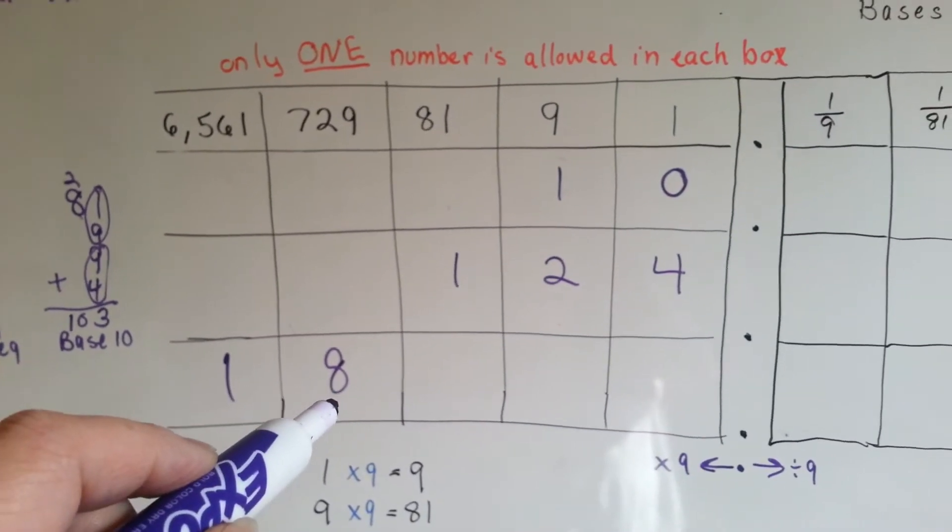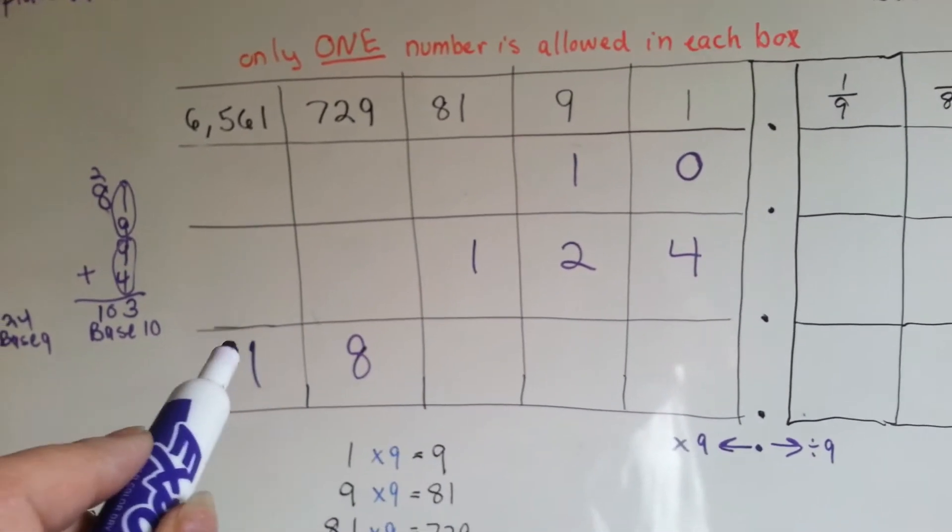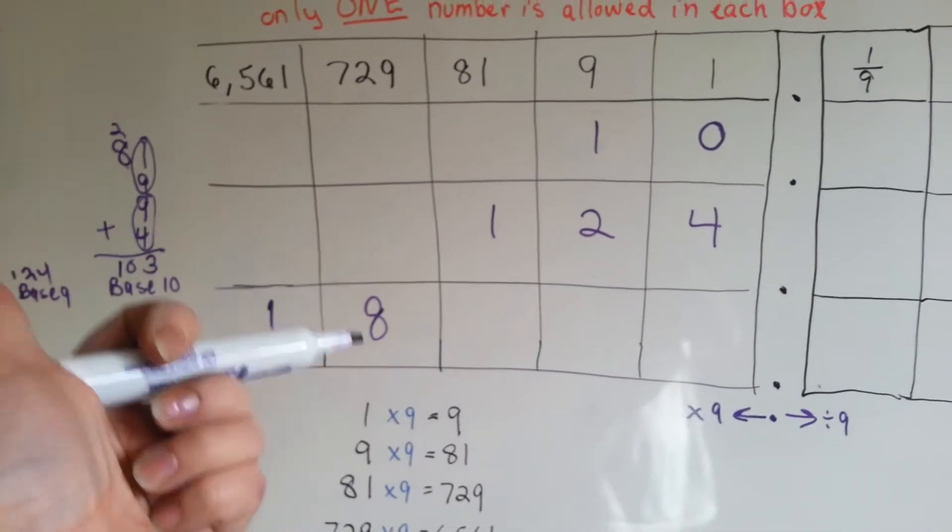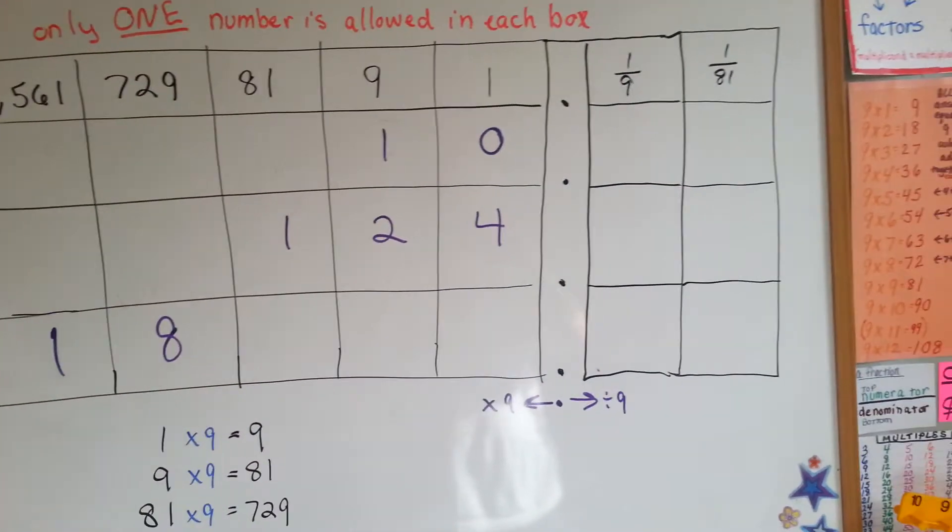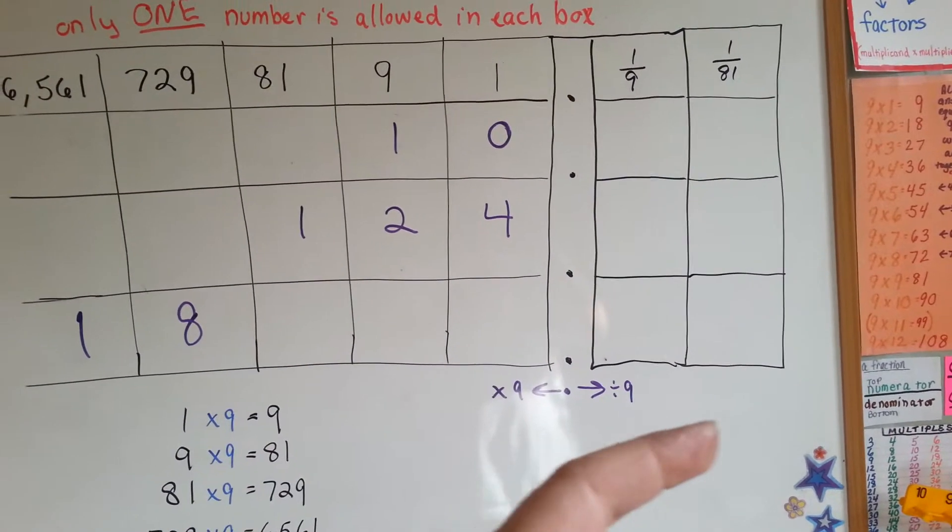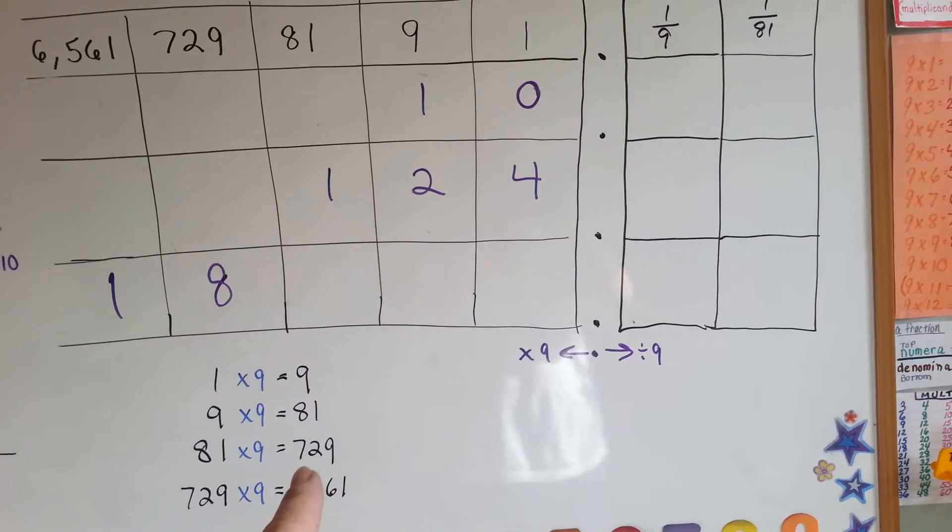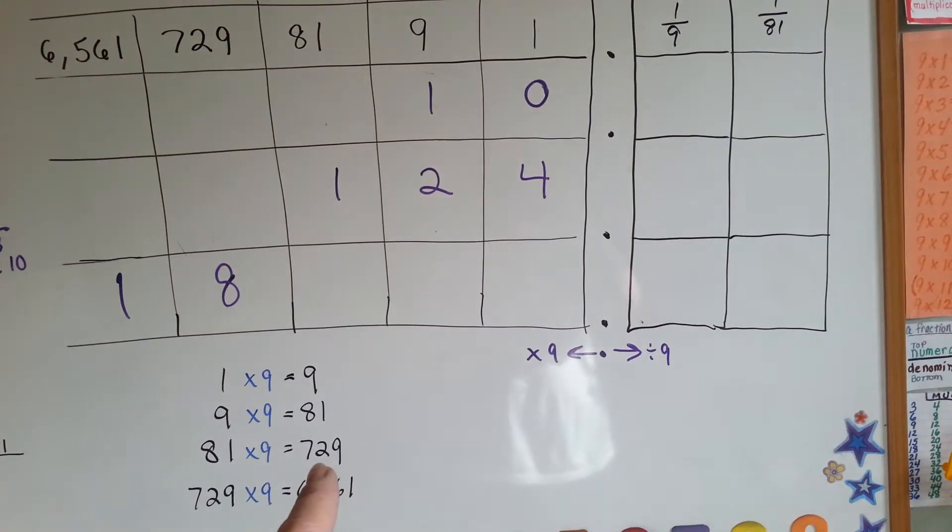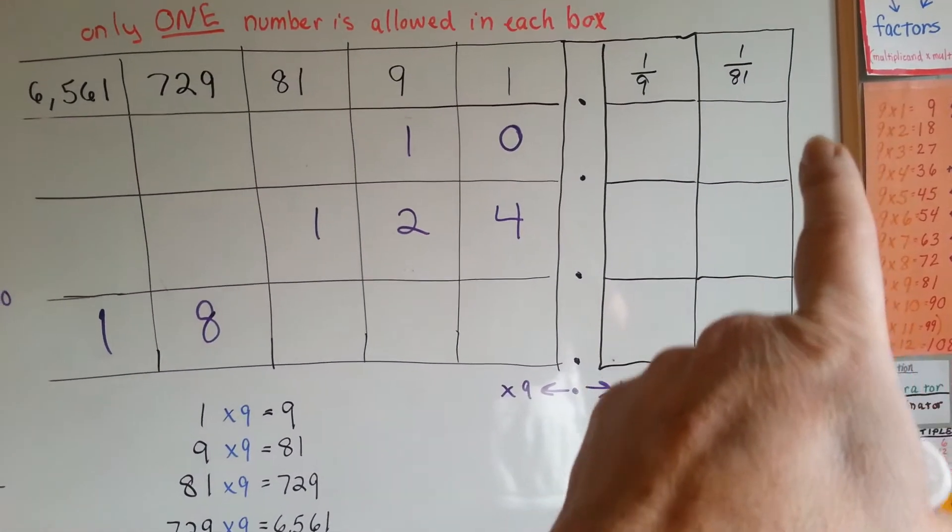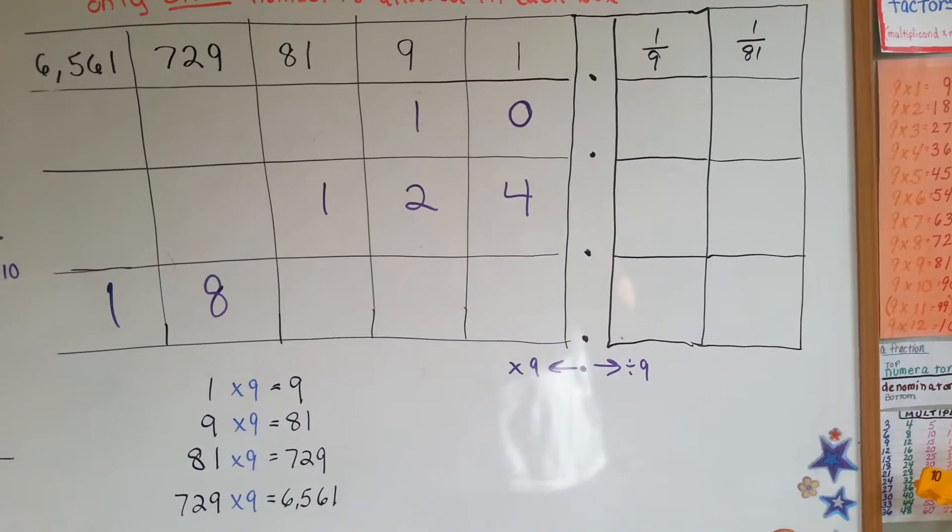So what you would do is, you would keep multiplying by 9 to get to your next place value to the left. Your next place value this way would be 1 over 729. 1 seven hundred twenty-ninth would be the next fraction over here, or the next decimal.